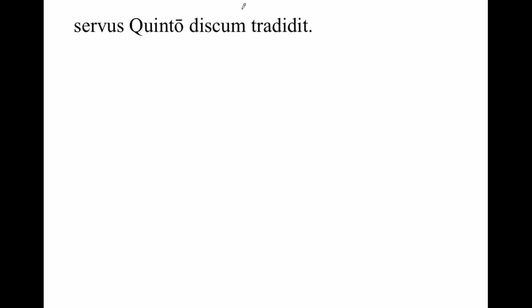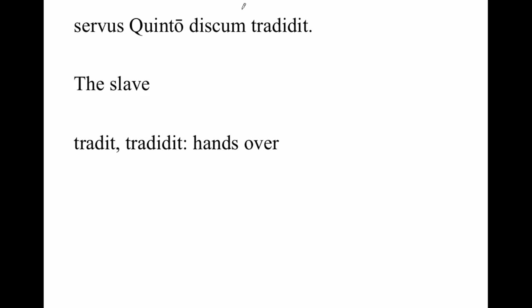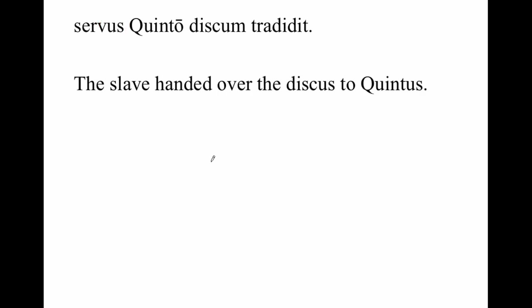Servus Quinto discum tradidit. The slave — nominative singular, our subject. Take note of another possibility for an irregular perfect tense: 'tradit' means 'hands over.' The perfect tense of 'tradit' — you double the 'di': it becomes 'tradidit.' So 'tradidit' means 'handed over the discus to Quintus.'